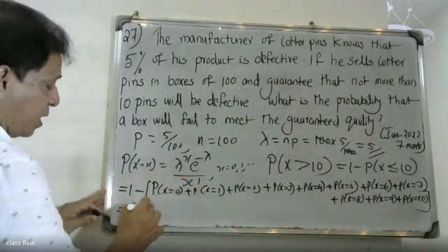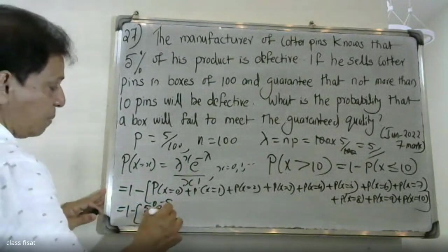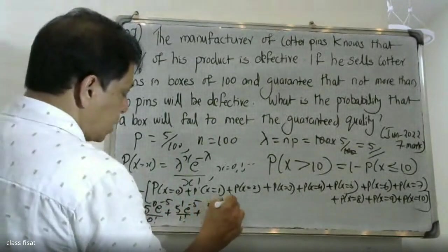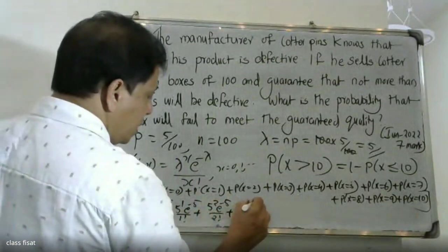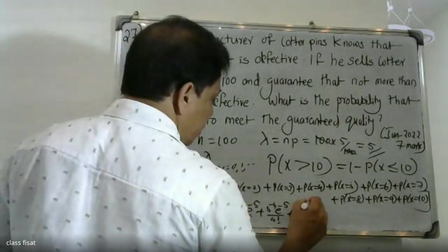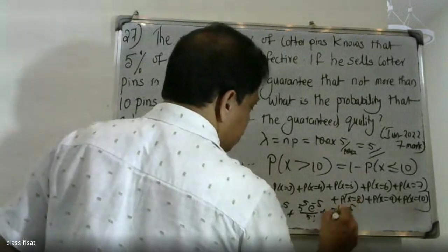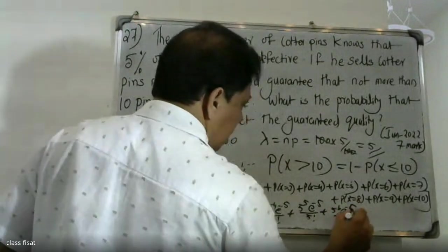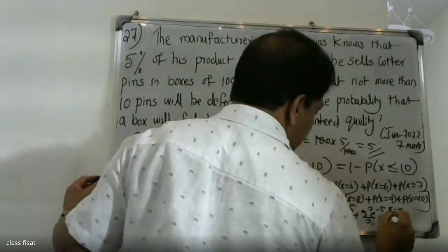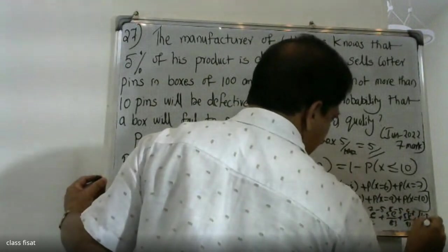Substituting lambda equals 5 into each term: 5^0 · e^(-5) / 0! plus 5^1 · e^(-5) / 1! plus 5^2 · e^(-5) / 2! plus 5^3 · e^(-5) / 3! plus 5^4 · e^(-5) / 4! plus 5^5 · e^(-5) / 5! plus 5^6 · e^(-5) / 6! plus 5^7 · e^(-5) / 7! plus 5^8 · e^(-5) / 8! plus 5^9 · e^(-5) / 9! plus 5^10 · e^(-5) / 10!.